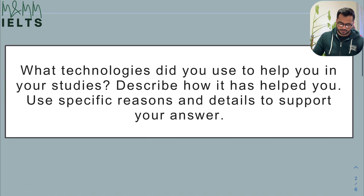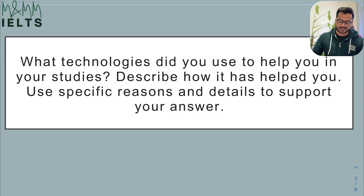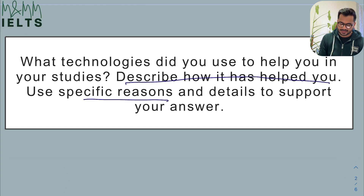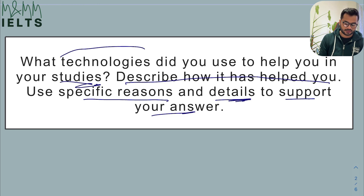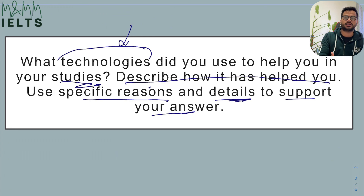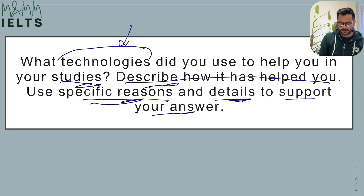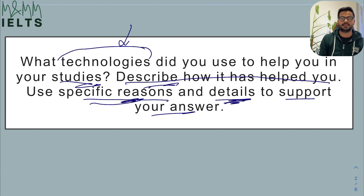The first one is: what technologies did you use to help you in your studies? Describe how it helped you, using specific reasons and details as examples to support your answer. So what they're asking is what sort of technologies were you using when you studied, and we need to not just name those technologies but also describe how they helped you. We have to give a specific reason and details to support the answer — so basically, explain your answer and give some examples.